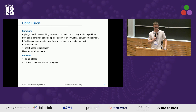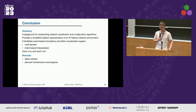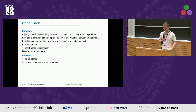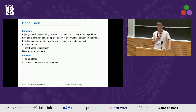As a conclusion: Mindful.jl is a playground for researching network coordination and configuration algorithms. It provides a simplified stateful representation of an IP optical network environment, facilitates event-based simulation, and offers visualization. It also supports multi-domain and intent-based interpretation, making it appropriate for numerous use cases. If you are interested, have a try and reach out for any discussions. The current version is an alpha release — the goal of this presentation is to get the word out and trigger interesting discussions. We already have plans for further progress and maintenance, and we hope to present a fully mature Mindful.jl ecosystem in the future.